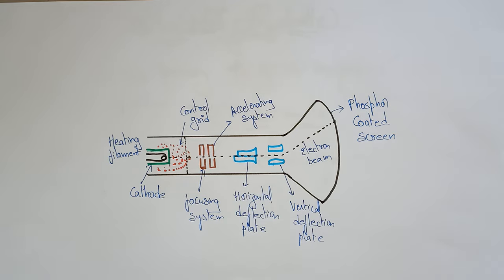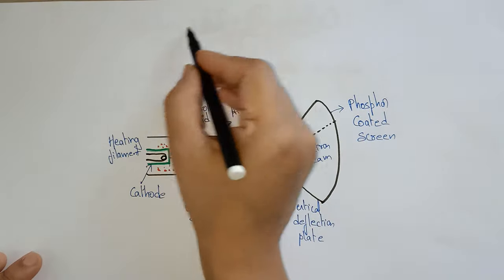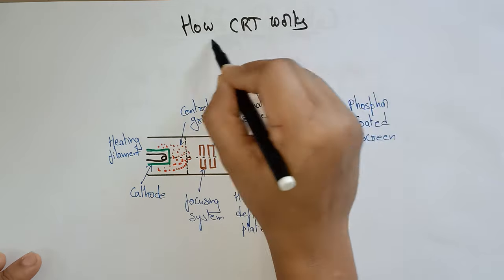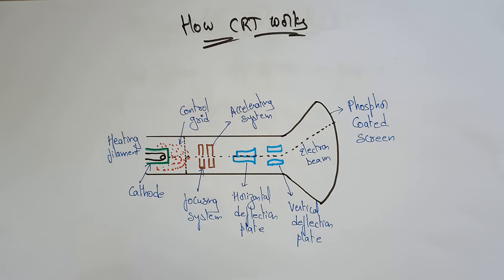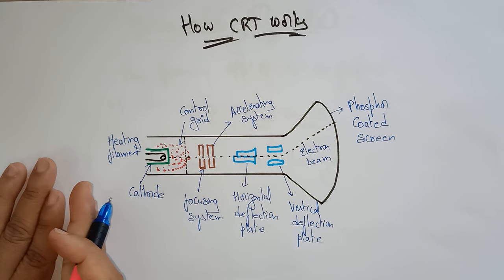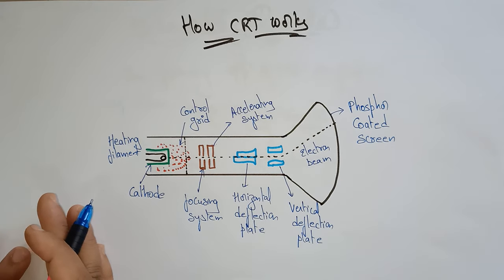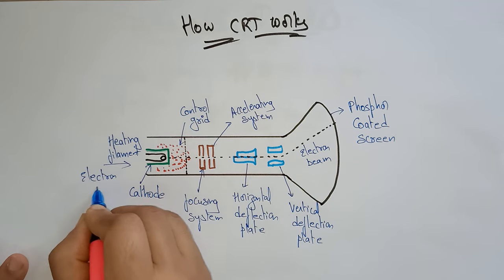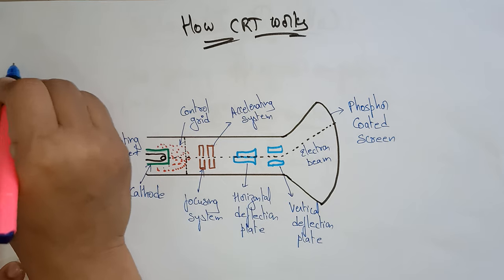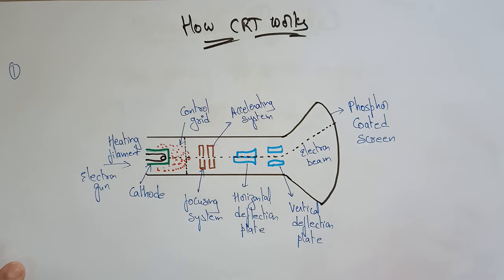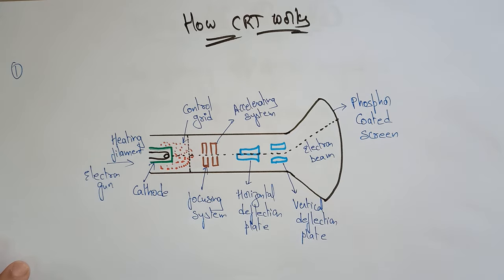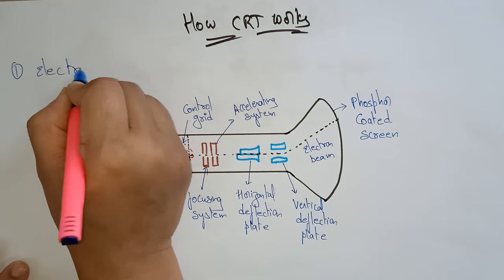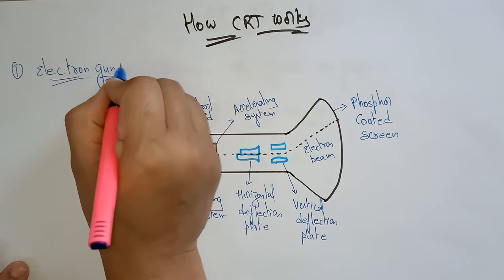Now let's have a look at how CRT works, step by step. On the left-hand side, the first component is an electron gun. These are the main components present in the CRT, and based on these components we can see how the CRT is going to work.